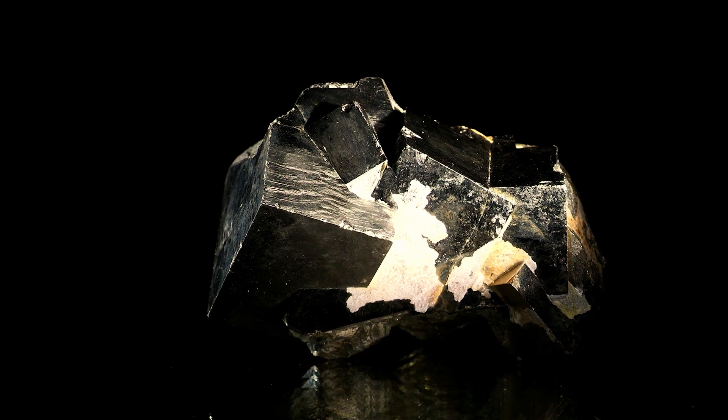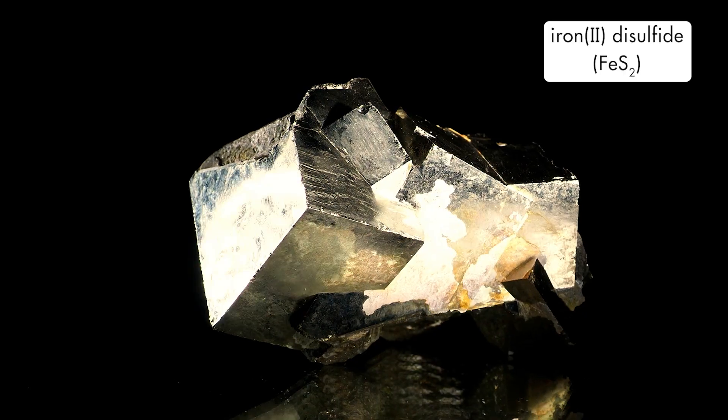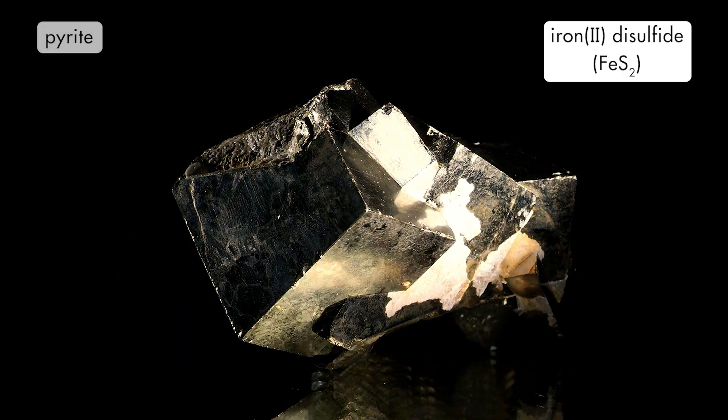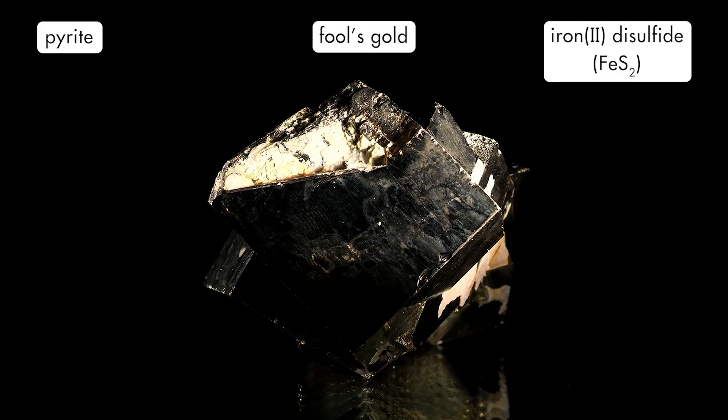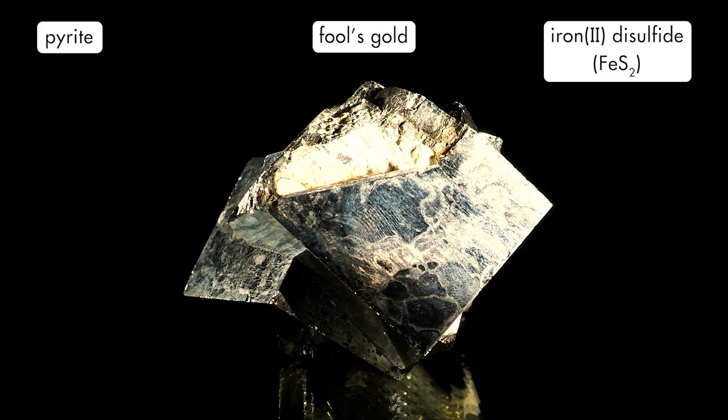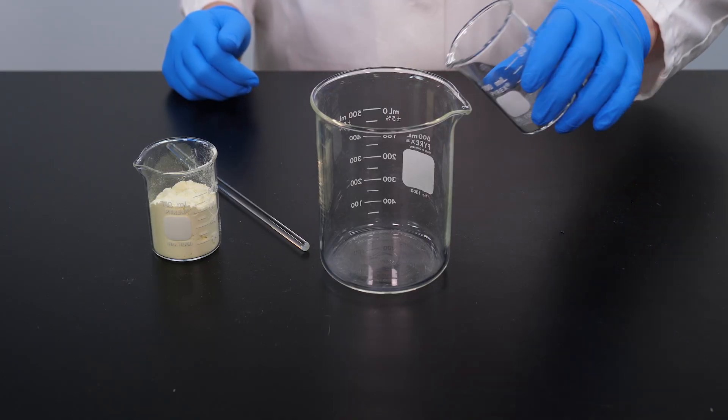Sulfur also combines with most metals to form metal sulfides. A common metal sulfide is iron 2 disulfide, which is also known as pyrite. Pyrite has been called fool's gold since it has been mistaken for gold. The synthesis reaction of zinc and sulfur produces zinc sulfide.